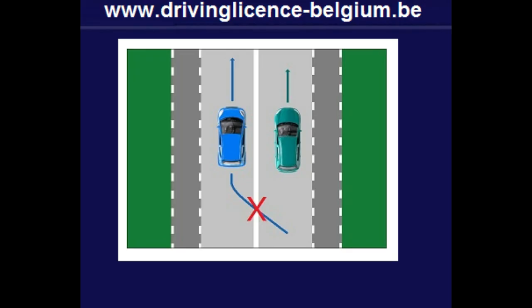A continuous white line. You are not allowed to drive over a continuous white line when overtaking another vehicle.